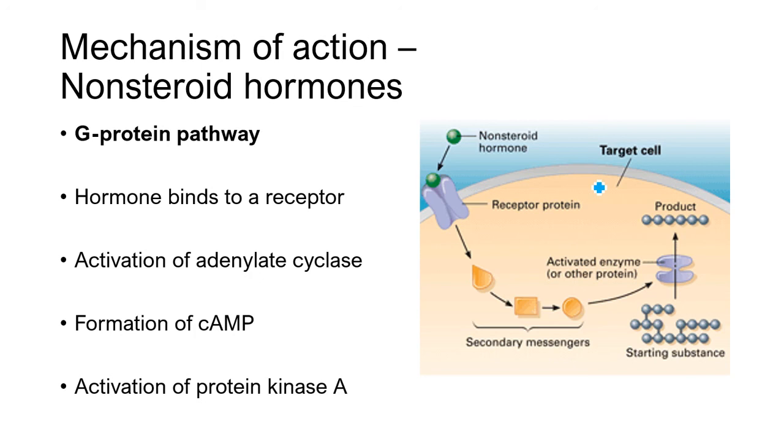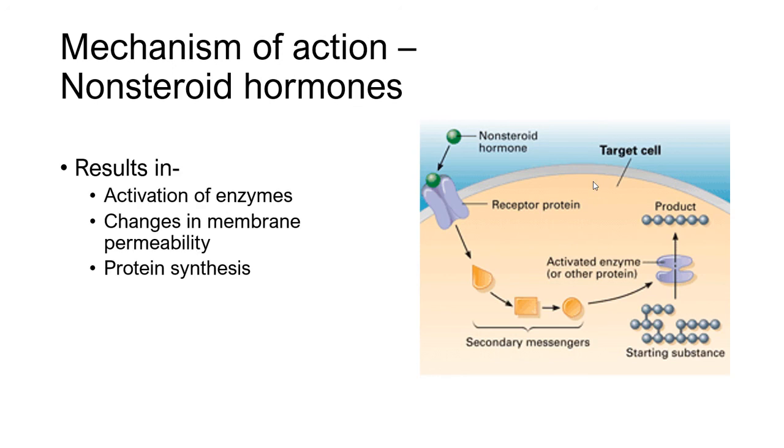And what it does is it creates cyclic AMP from ATP. And then that cyclic AMP can then activate protein kinase A. And so when we activate these proteins, we can activate enzymes. We can cause membranes to become more or less permeable. Because remember, a G protein can also ultimately open an ion channel. It can also result in protein synthesis. So some of these are the same. Some of these are different. But the way that we form them or that these hormones work is very different.